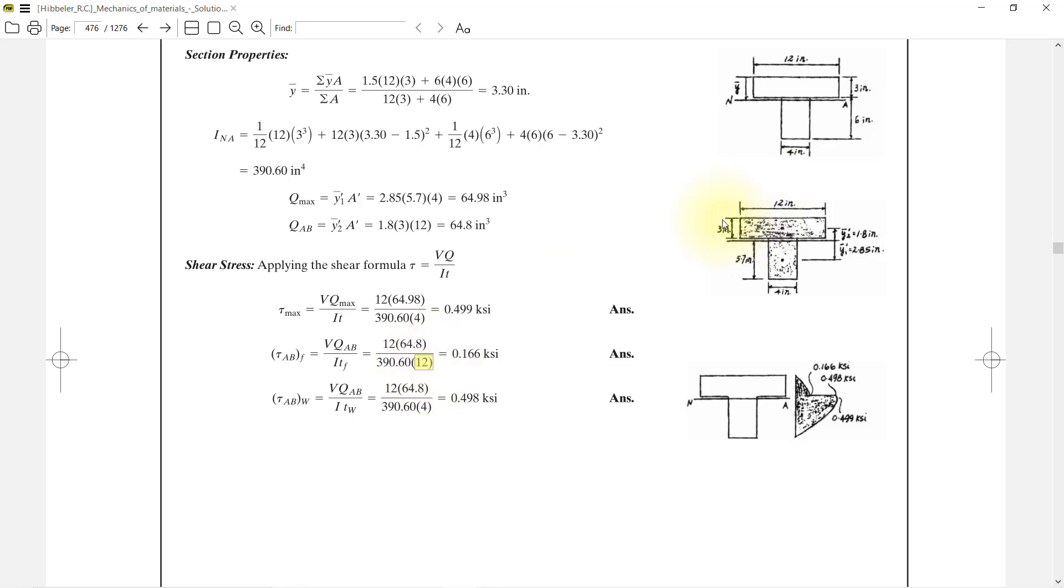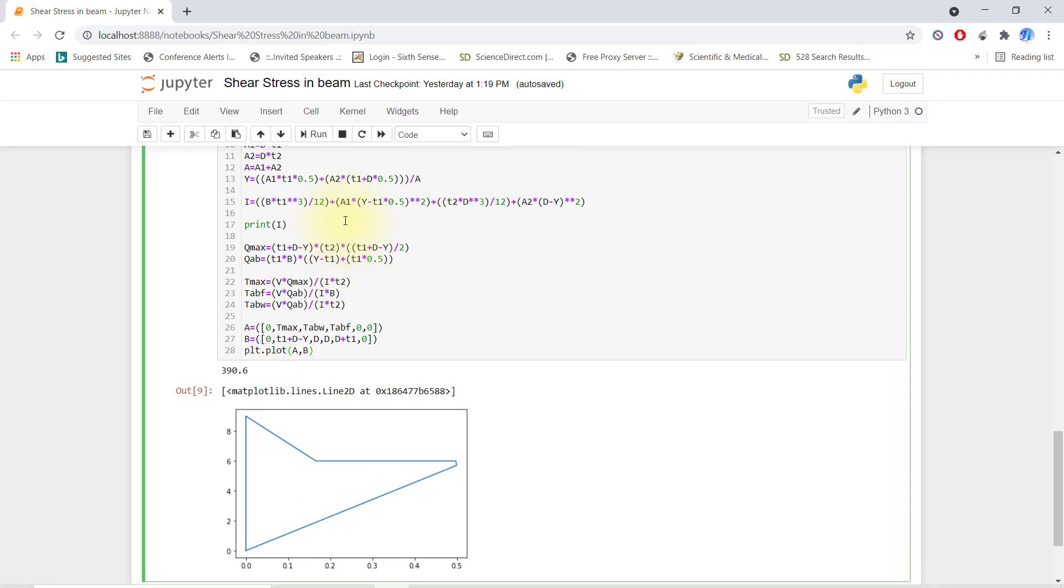Same thing for the flange, but here the thickness will be 12 inches, so we get 0.116 ksi. Same thing for the web, but our Q_ab will be different. Here you can see 64.98 versus 64.8, so we got 0.49 ksi.